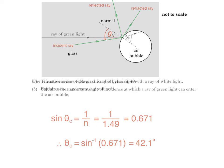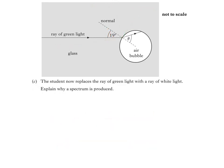In part c, we're told that the student now replaces the ray of green light with a ray of white light, and asked to explain why a spectrum is produced. So, first let's change the diagram slightly. To explain then, we'll use the equation from before.